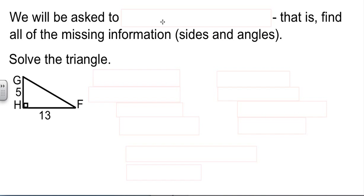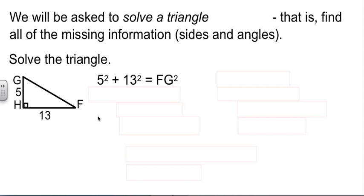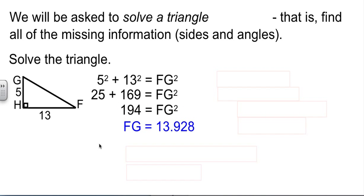One of the things they're going to ask us is to solve a triangle. When they ask us to solve a triangle, our job is to find everything that we weren't given. Ultimately we need to know the lengths of all three sides and the measure of all three angles. We have two sides and one angle, so our job is to find one more side and two more angles. I'm going to go after the third side first because it's easy to get - it's Pythagorean theorem. We'll plug in the 5 and the 13 to the Pythagorean theorem, work through the arithmetic, and find out the third side is 13.928.